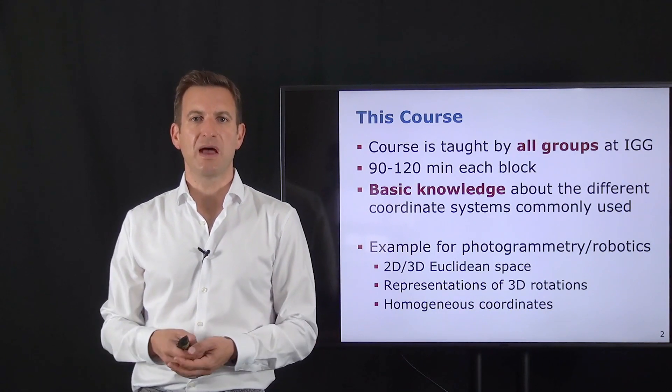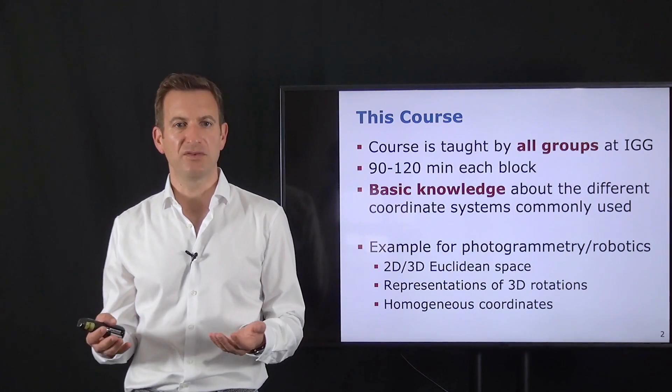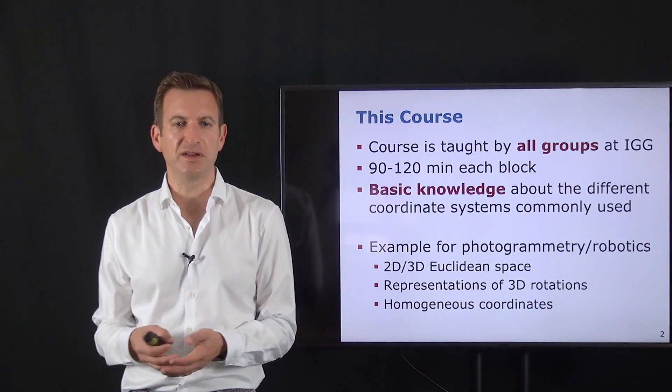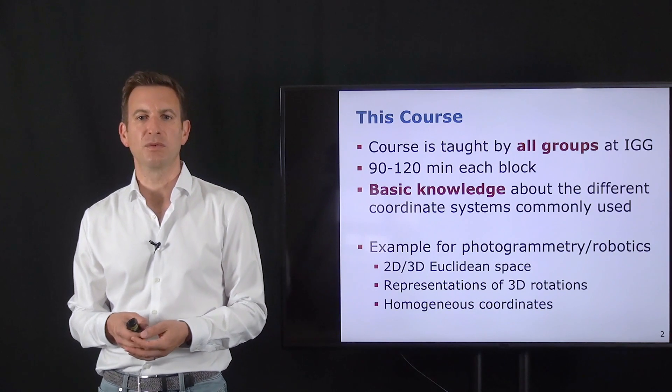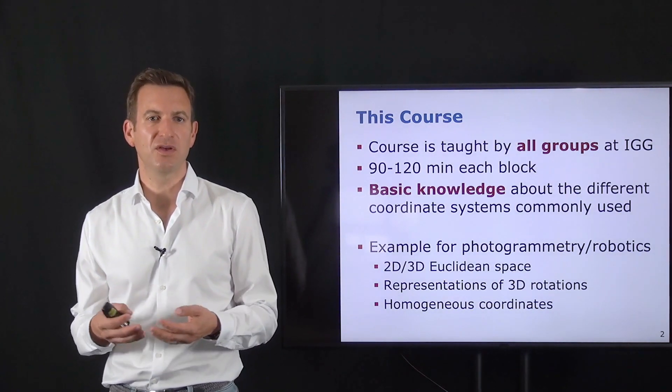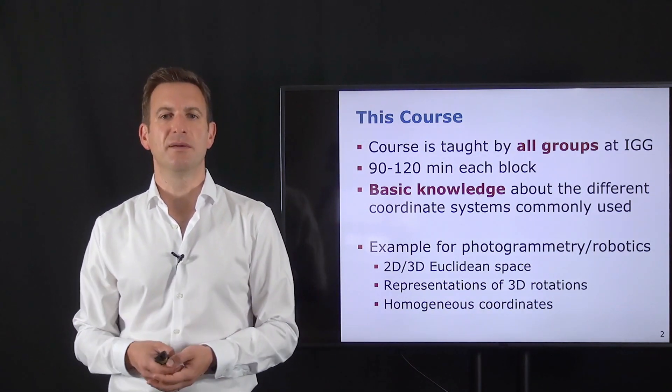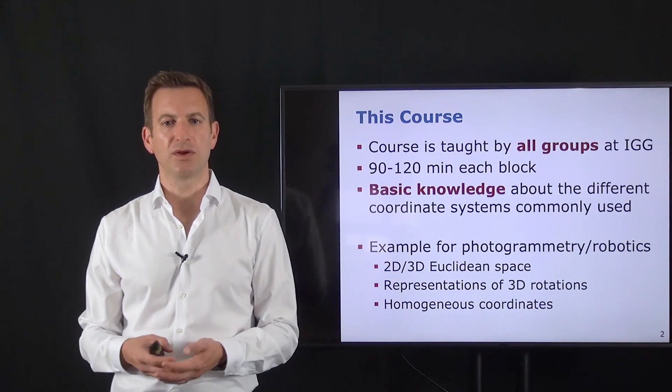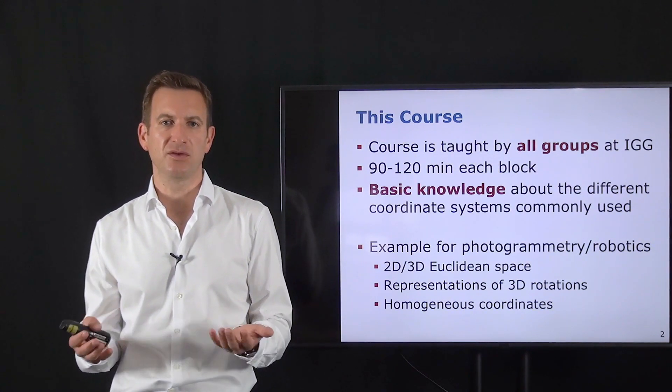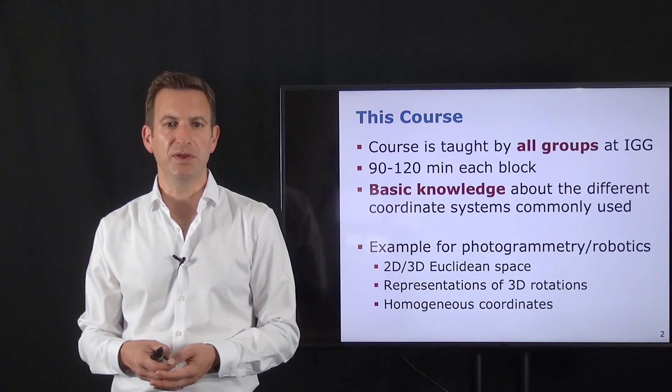As a concrete example for my area, which is robotics and photogrammetry, we will look, for example, into basic 2D, 3D coordinates, the Euclidean space. This is something that you probably know already. Questions how can we represent matrices. Rotation matrices are one example, but also other representations such as a quaternion, for example. And then we will look into homogeneous coordinates. This is something that you probably don't know or at least don't know to the extent we will be using it.